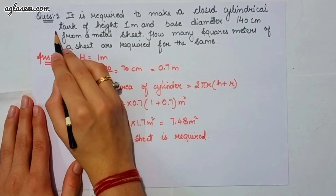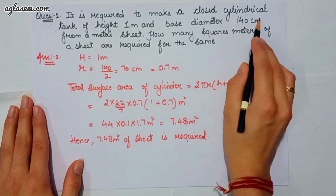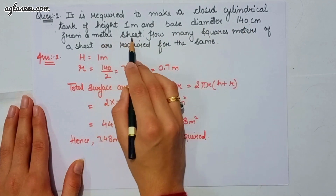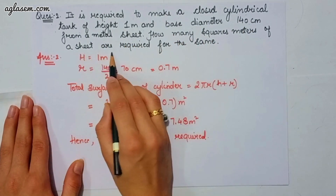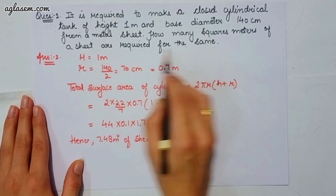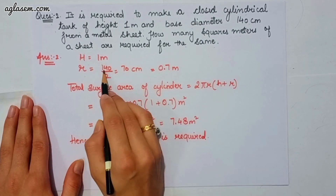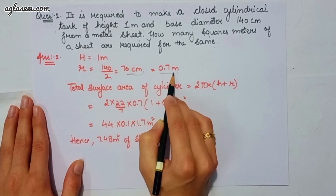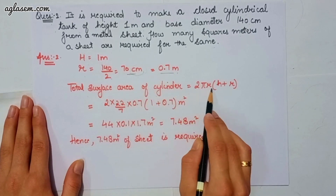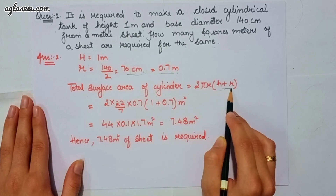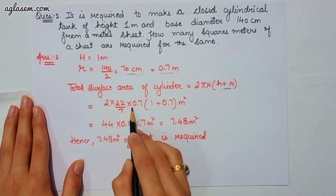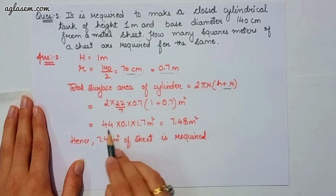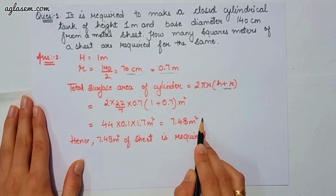Moving to our second question: it is required to make a closed cylindrical tank of height 1 meter and base diameter 140 cm from a metal sheet. How many square meters of sheet are required? Height = 1 m, radius = 140 ÷ 2 = 70 cm = 0.7 m. Total surface area = 2πr(h + r) = 2 × (22/7) × 0.7 × (1 + 0.7) = 7.48 m². So 7.48 m² of sheet is required.